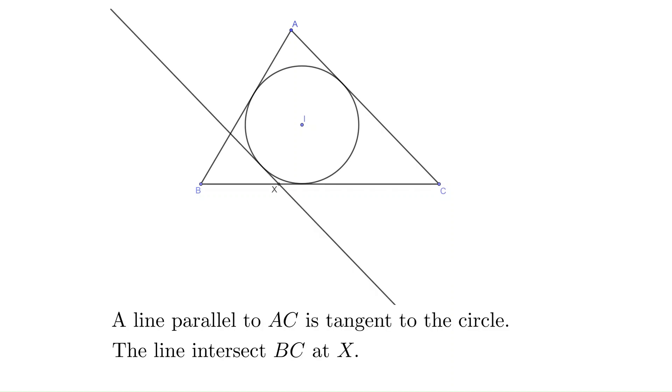Draw a line parallel to side AC and is also tangent to the circle. The line intersects BC at point X.